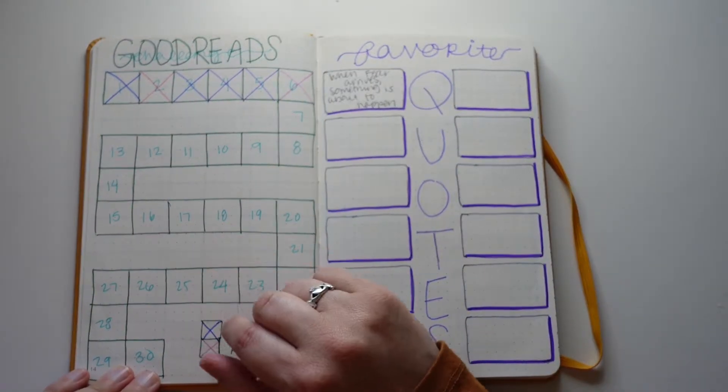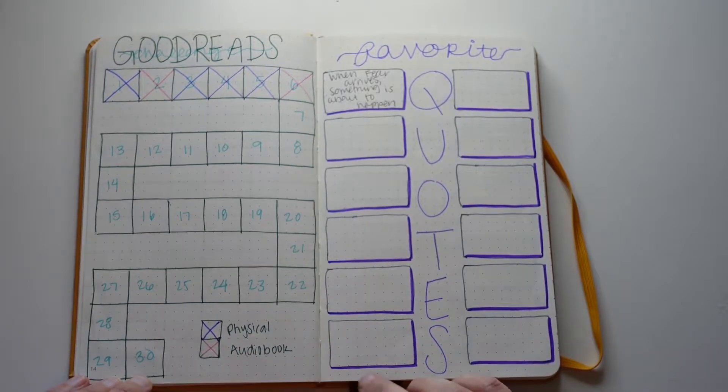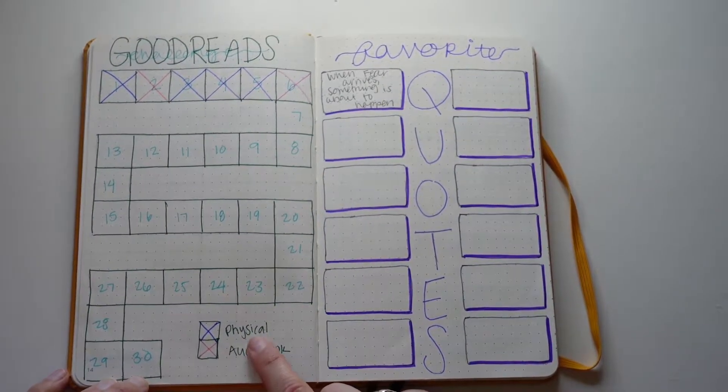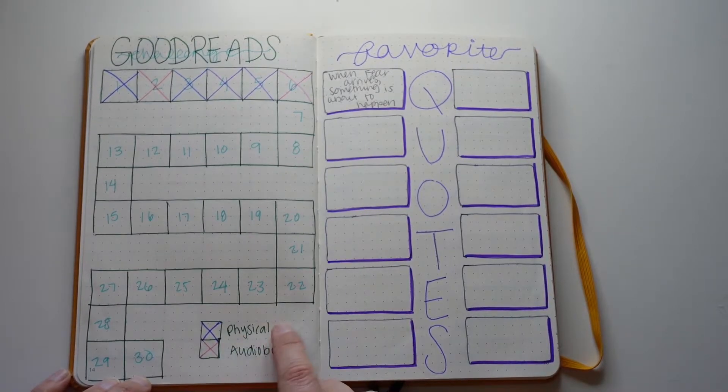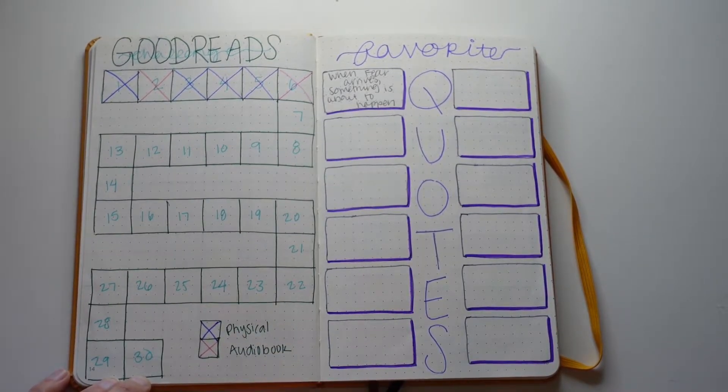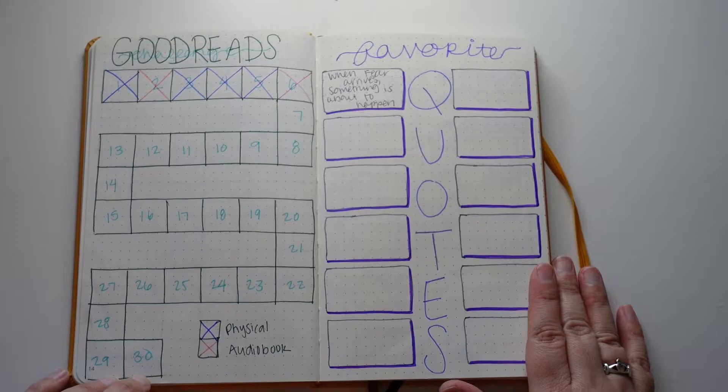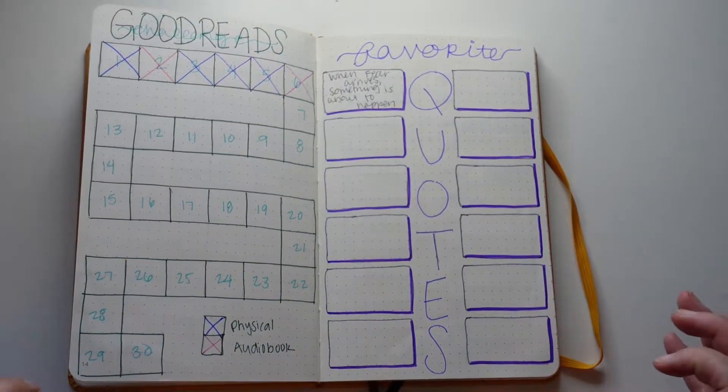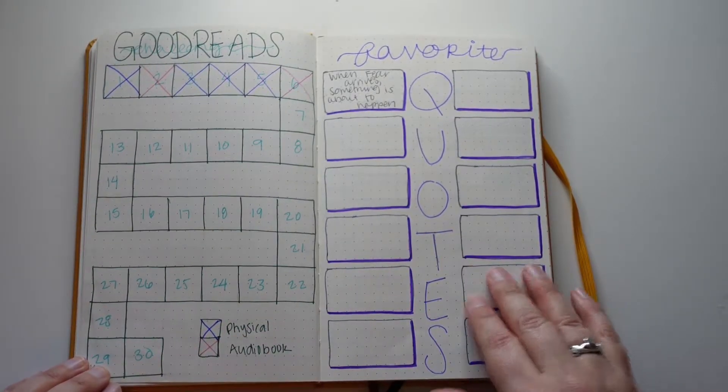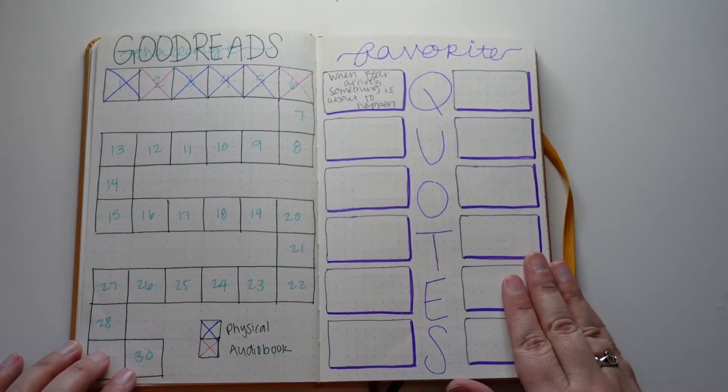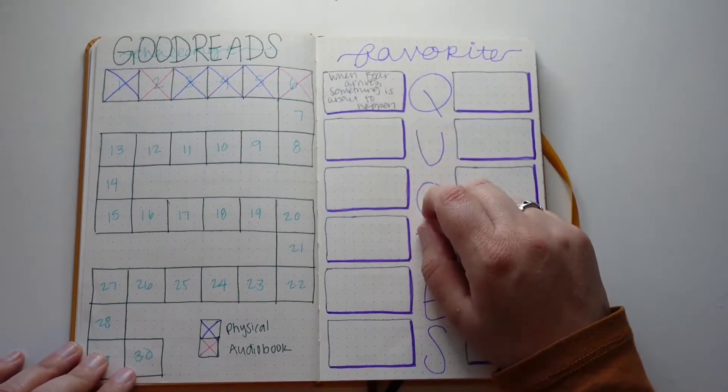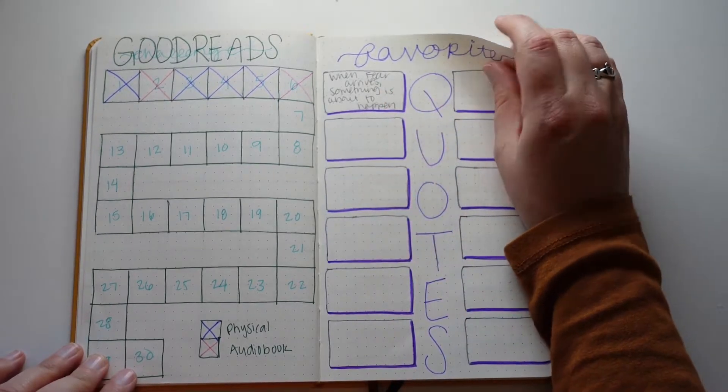This is my Goodreads challenge that I do track in the Goodreads app but I also wanted to put it into my journal. It looks kind of like a game board and I want to read 30 books by the end of the year. I color code it by format, physical or audio book. On the other side I have my favorite quotes from the books I read this year. I have 12 boxes. My original plan was to do a quote a month but currently I'm just adding to it as I see quotes. My favorite one so far is When Fear Arrives, Something is About to Happen. It's from Crooked Kingdom.